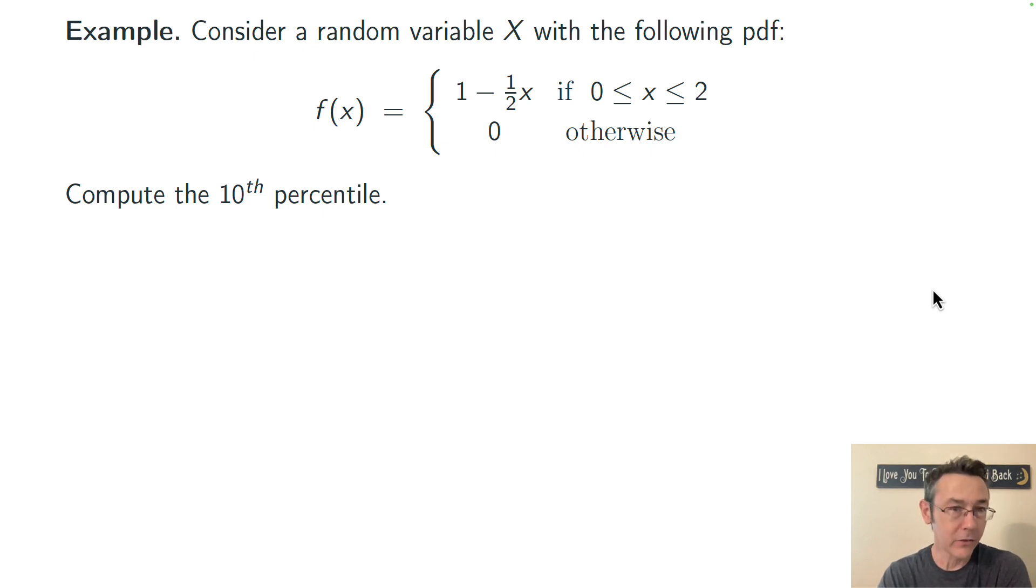All right, let's see an example. Suppose we have a continuous random variable X that has this PDF. We're on the interval from x equals 0 to 2. That's the support of the random variable. And the density function on that support is 1 minus ½x. And I'll show you a picture of that in just a second. It's a triangle. We want to compute the 10th percentile.